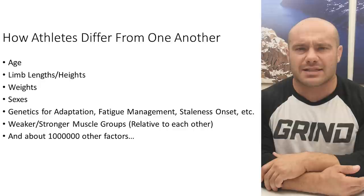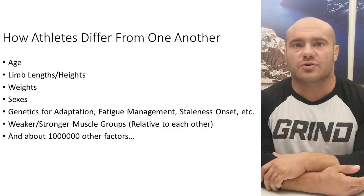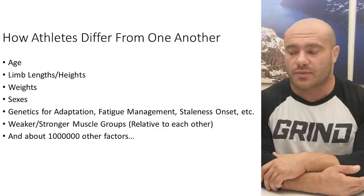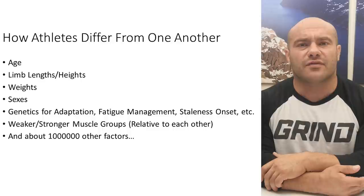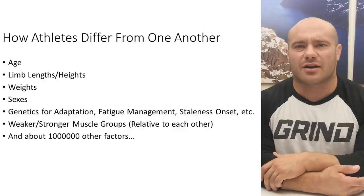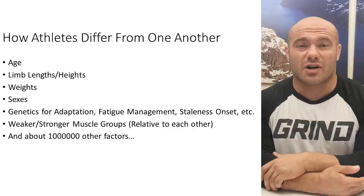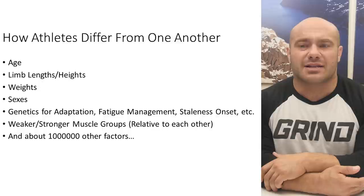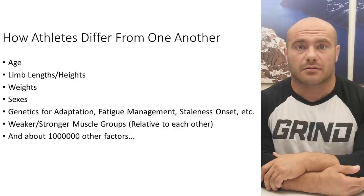Fatigue management differs too. Some individuals can have huge volume-load programs and recover just fine. Other individuals at fractions of those volumes start to experience significant recovery problems. What about staleness onset? If one individual can get great stimulus from the same exercises for six months, but another only gets three months before experiencing significant staleness, giving both the same mesocycle structure where they both rotate exercises at four or four and a half months means one is not rotating nearly frequently enough and the other is rotating too often.